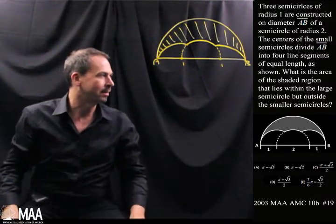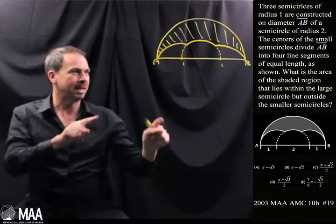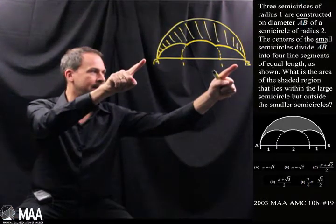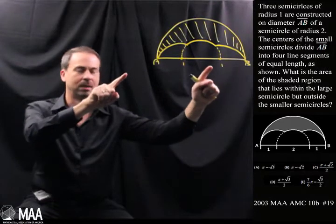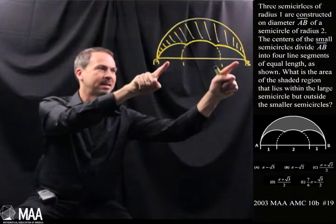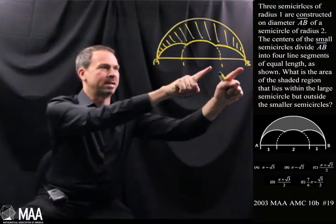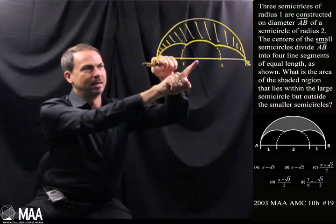What about these things? The centers of the small semicircles divide AB into four segments of equal length as shown. I was kind of curious, this picture is a bit odd. I only see three segments here but I guess they mean one inch and one inch so maybe that's two inches long. So I've got, I guess, oh yeah, radius 1 inch, radius 1 inch and radius 1 inch.